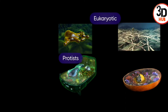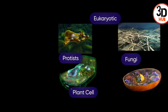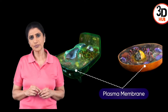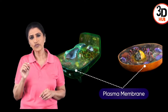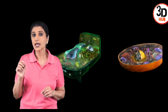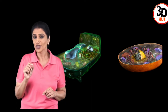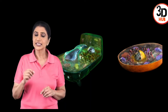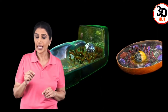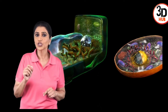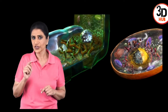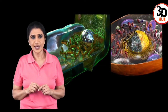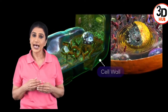The eukaryotic cellular organization is found in protists, fungi, plants, and animals. A typical eukaryotic cell comprises a covering of plasma membrane surrounding the semi-liquid substance called cytoplasm. The plasma membrane is semi-permeable, executing the function of exchange of materials in and out of the cell.